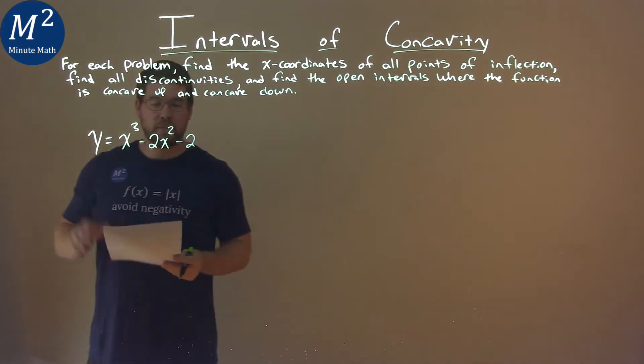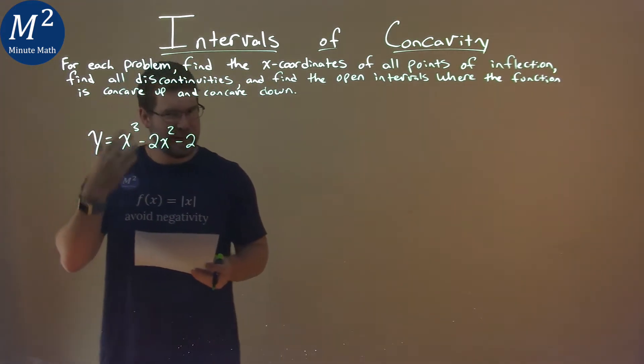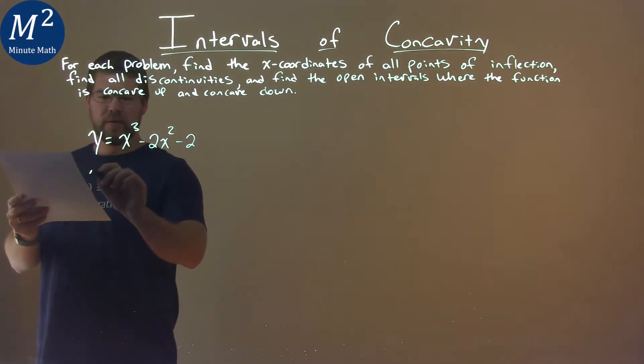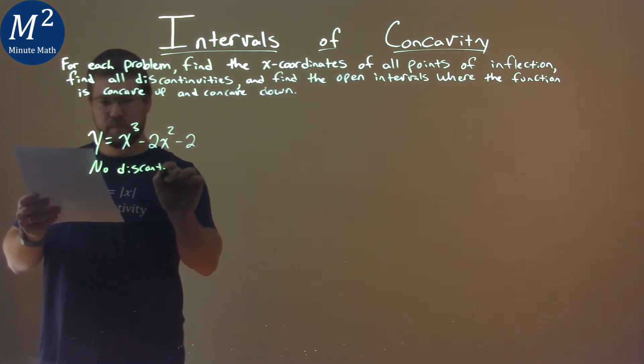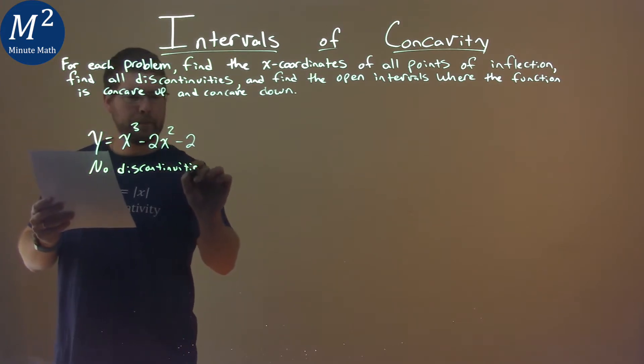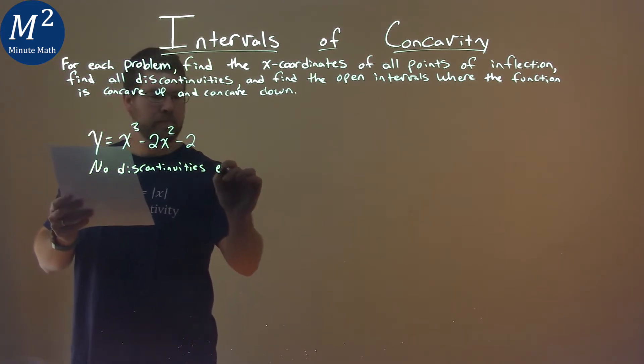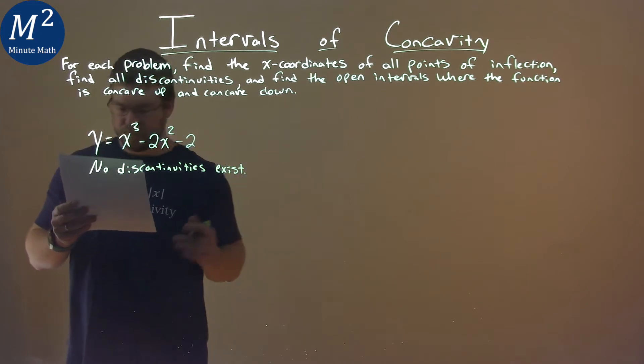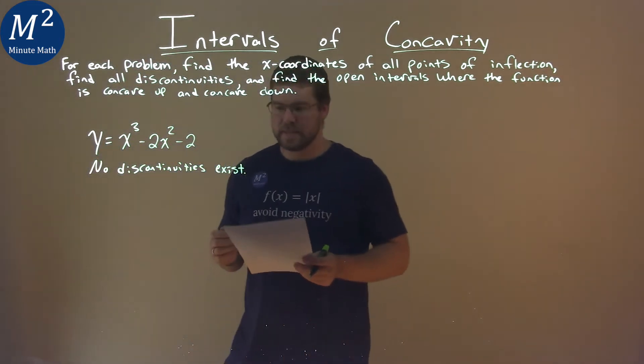Now, we have a basic polynomial function here, and we know it's actually continuous everywhere. So we would say right off the bat that no discontinuities exist.